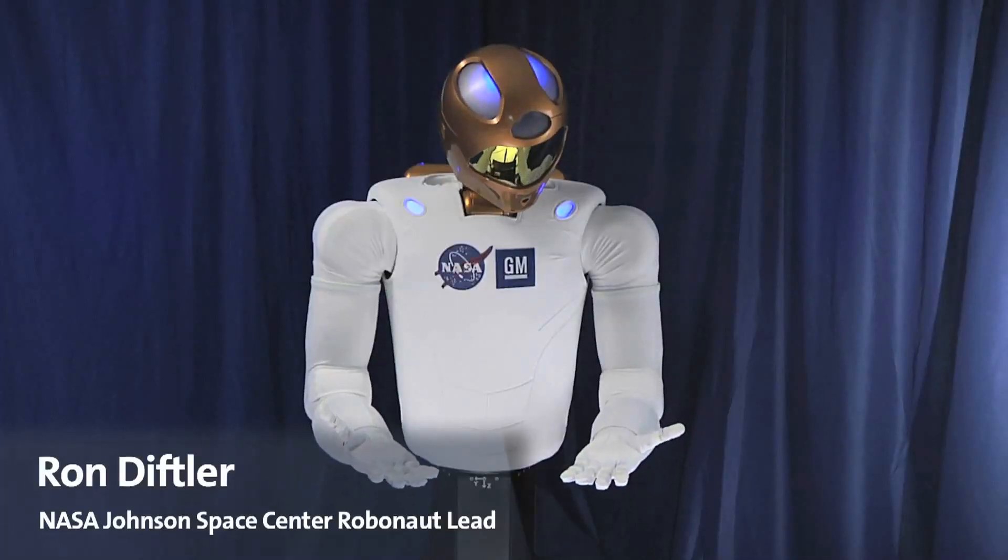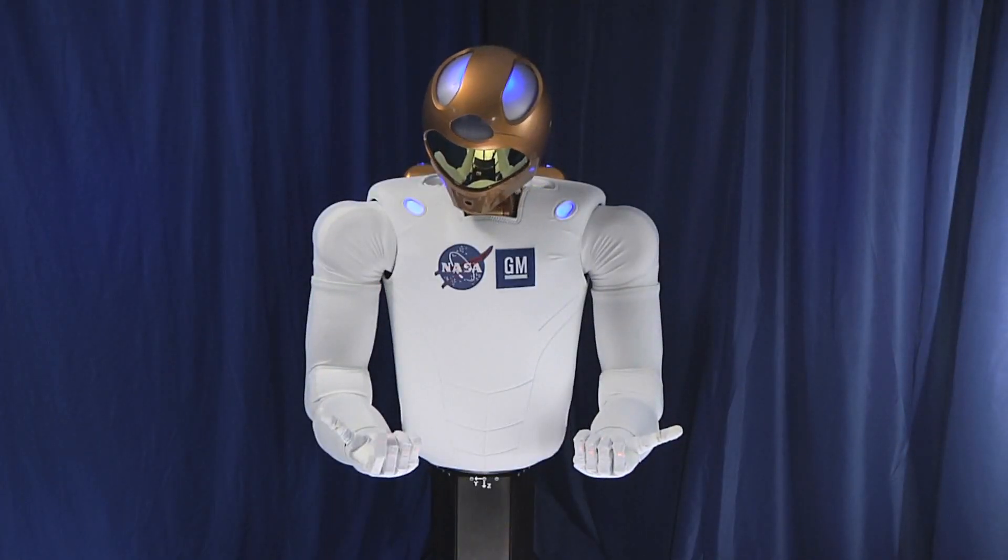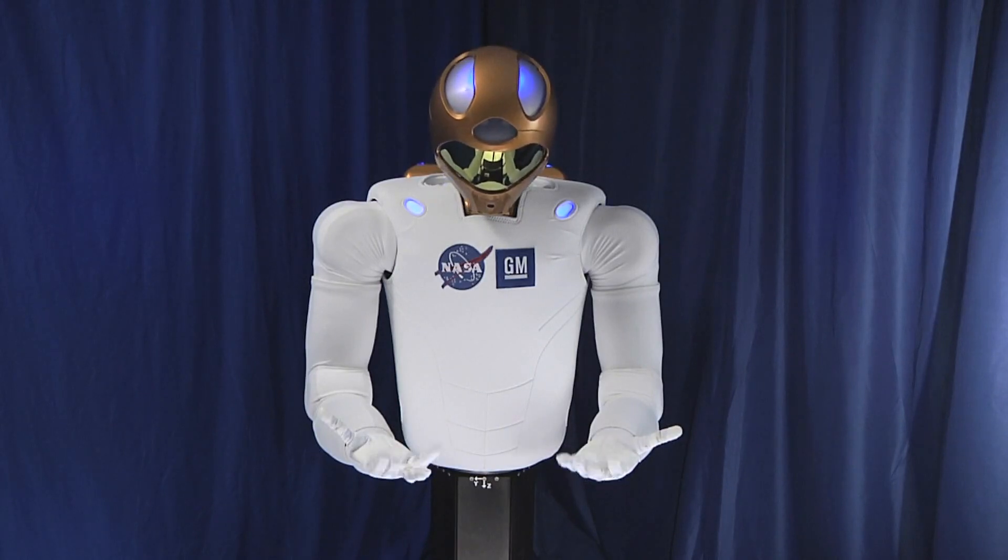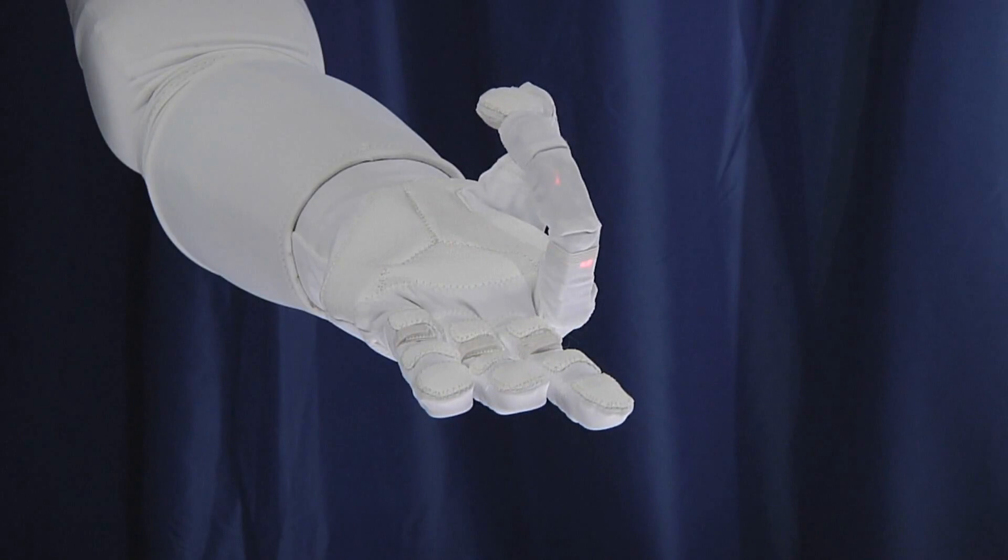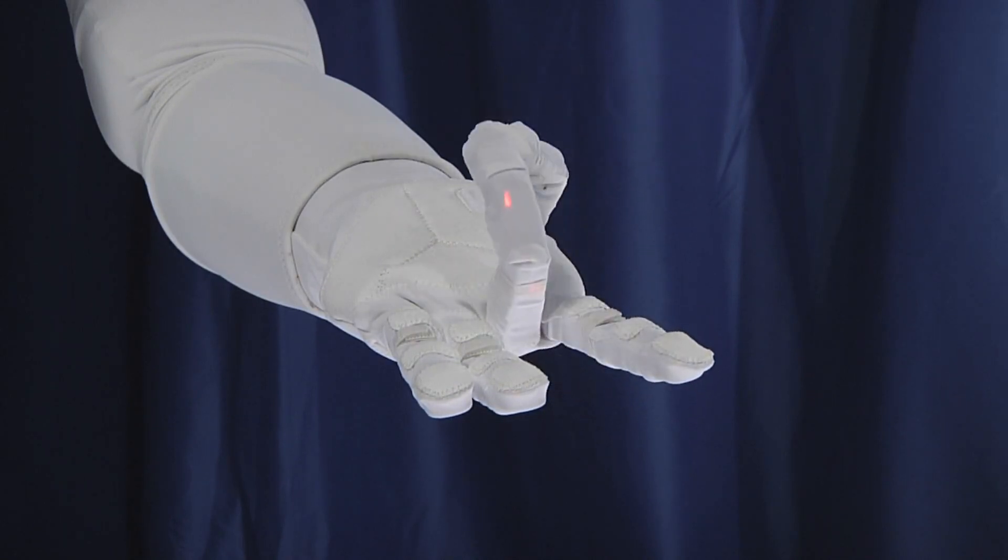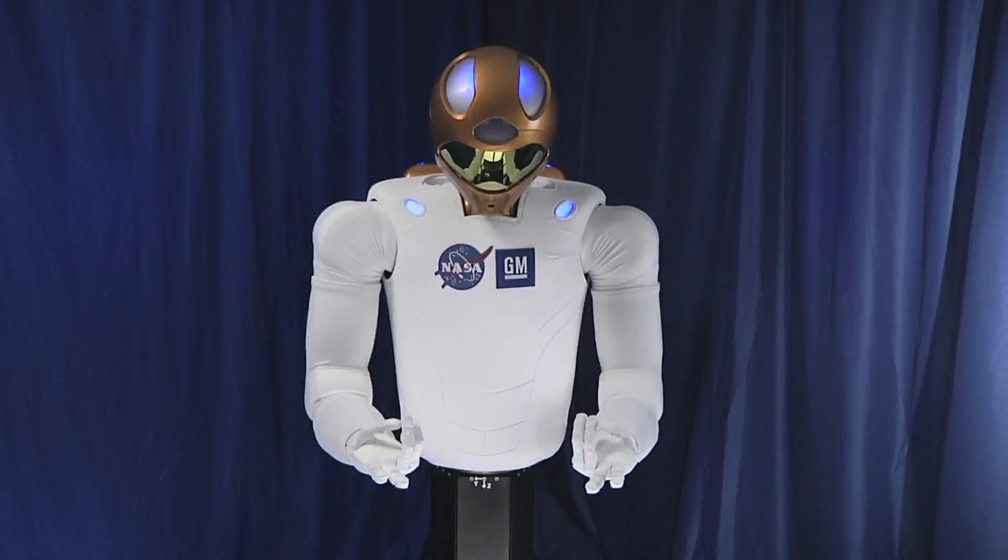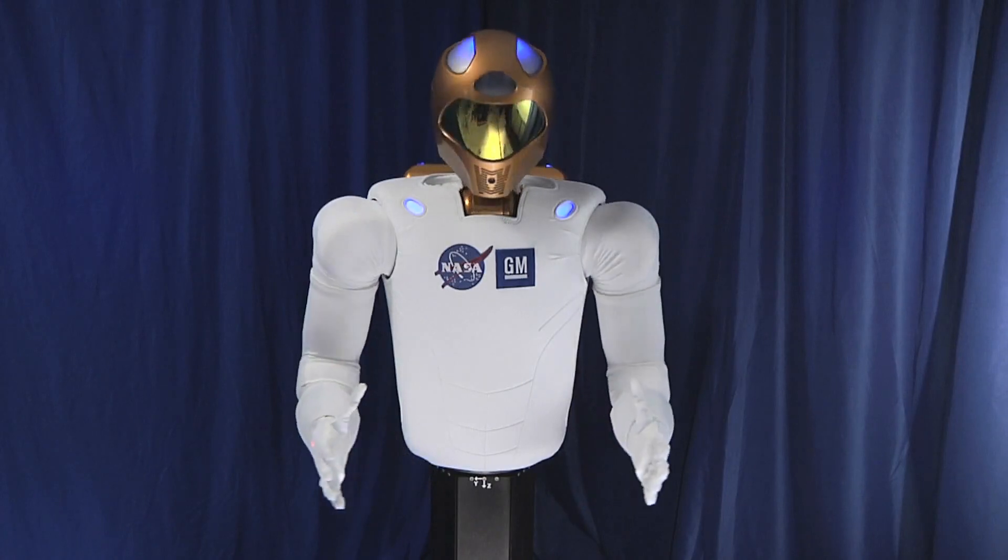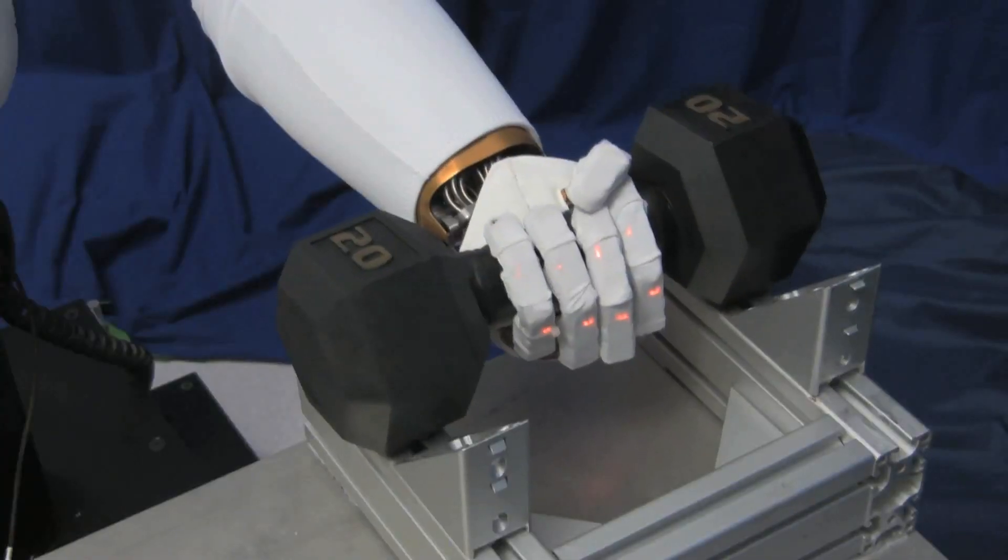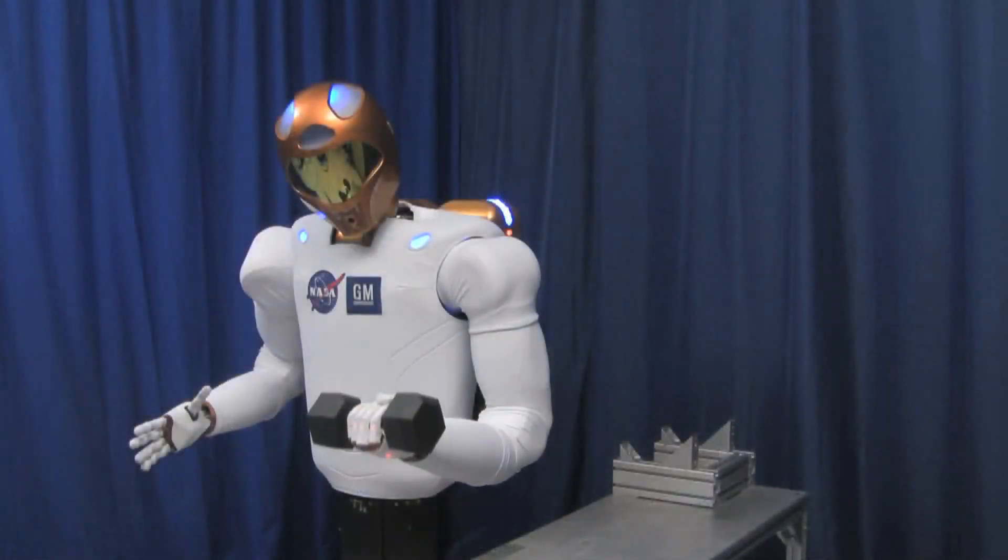Starting with R1, we went after both the hands and arms. They give you a workspace and dexterity that's very similar to a human. When we went to R2, we increased that. We increased the speed at which we could perform tasks and the level of dexterity so that we can perform even more tasks than the original R1.